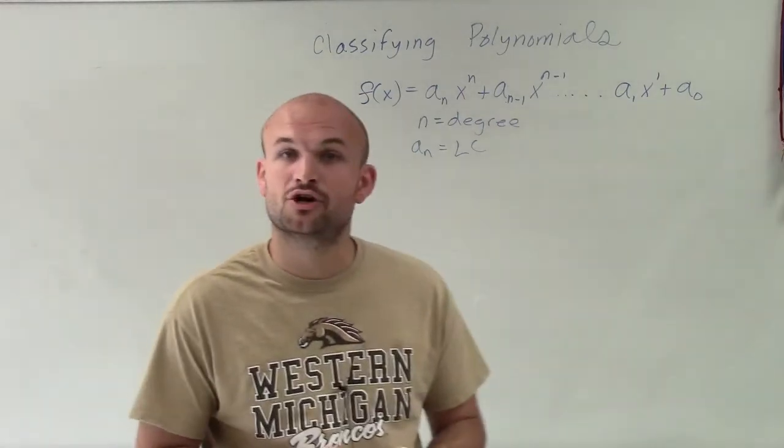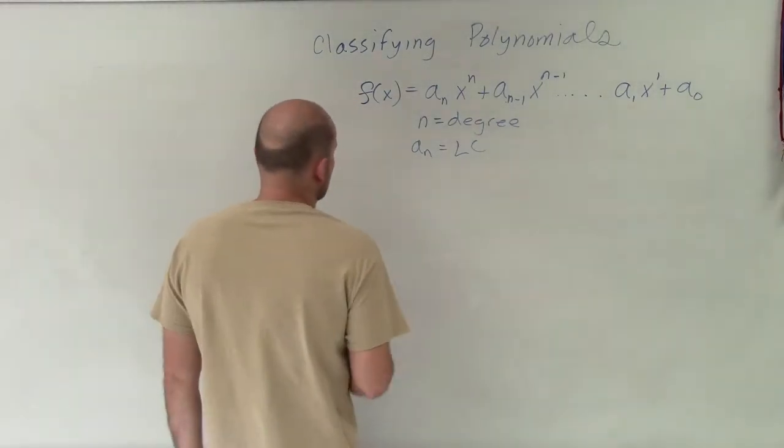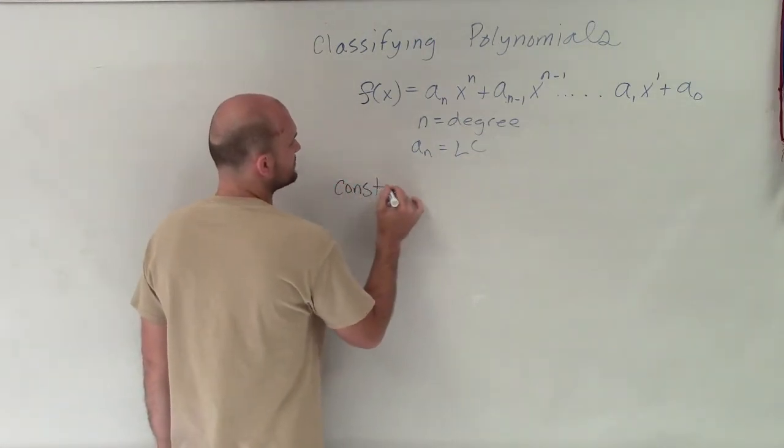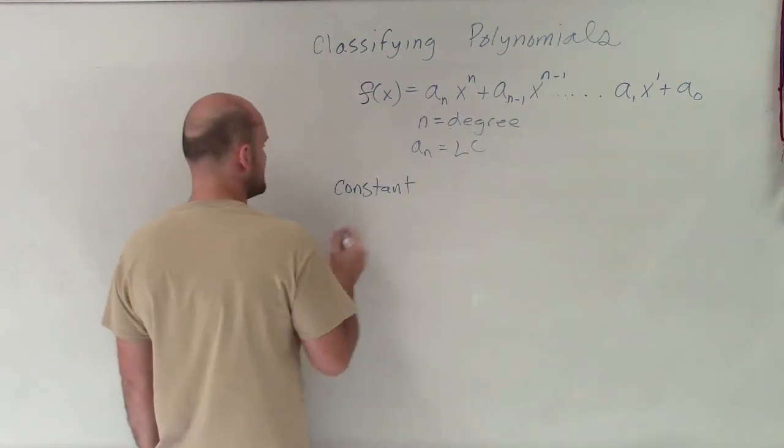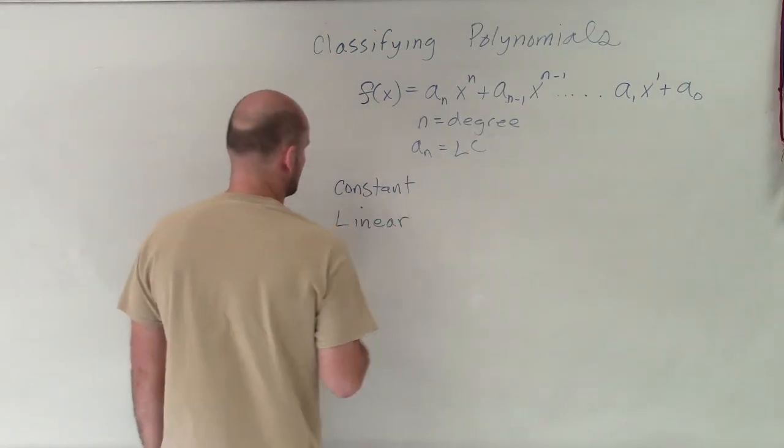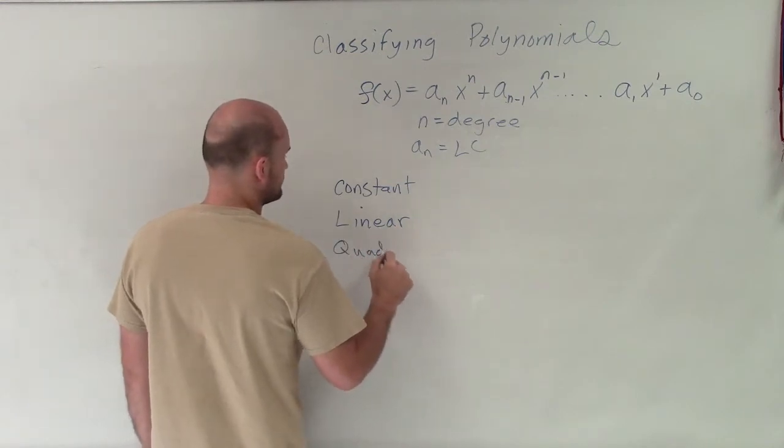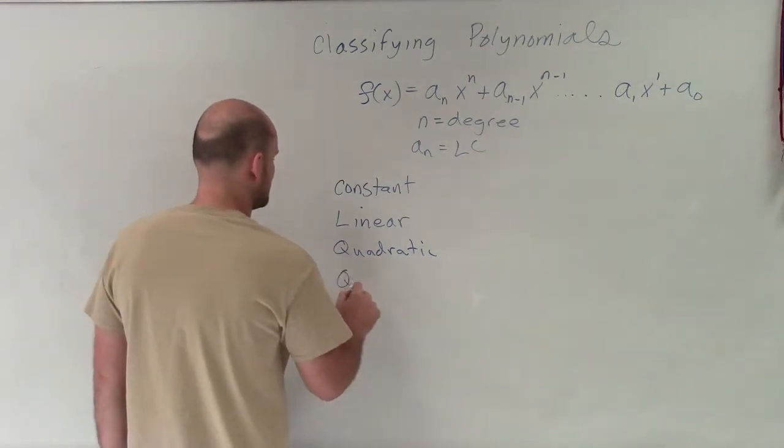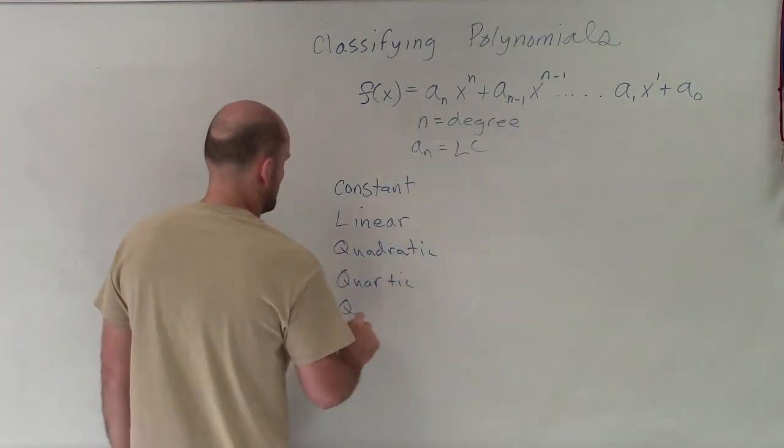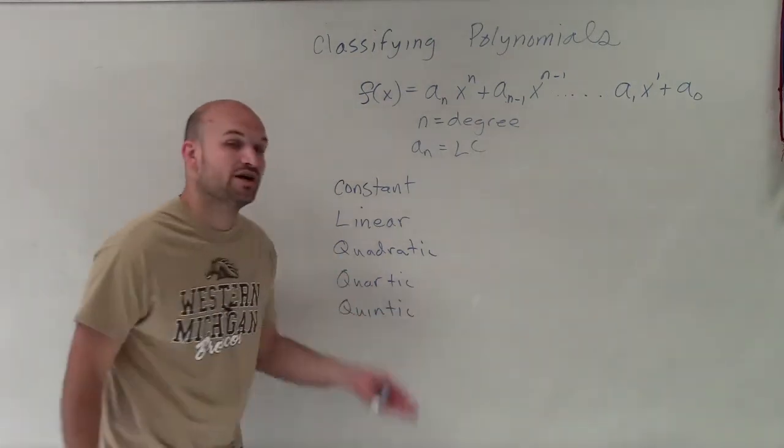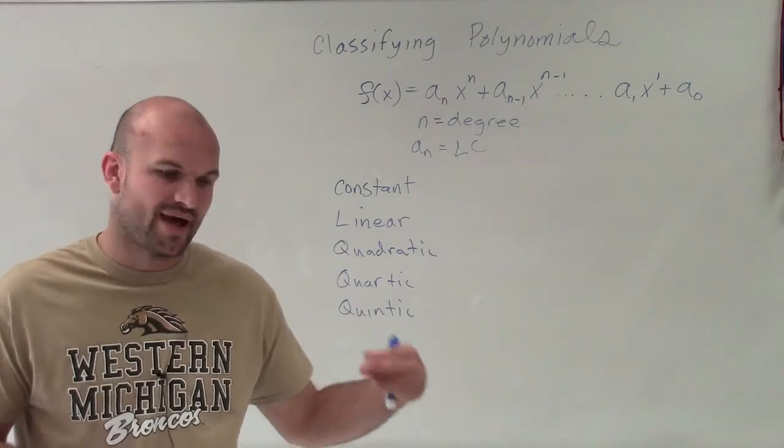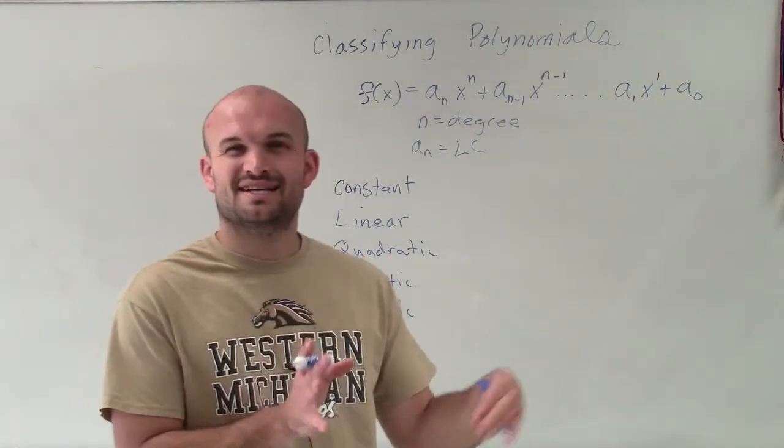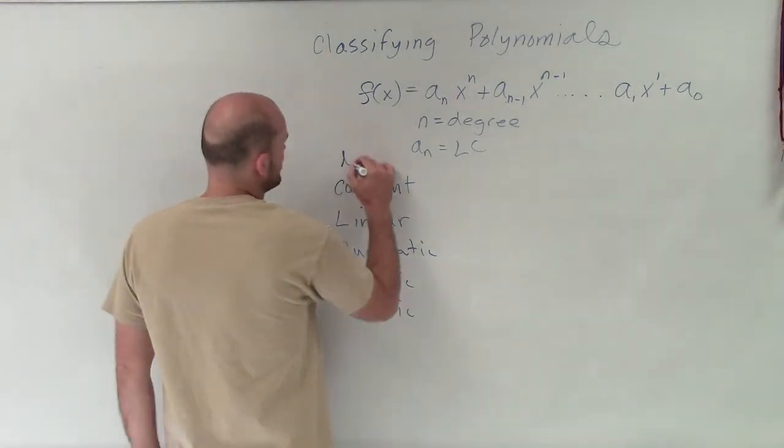So now we need to talk about the different types of polynomial functions. And we have a couple of them. First of all, we could have a constant. We have a constant, we could have a linear, we could have a quadratic, we could have a quartic, and a quintic. And we can keep on going on and on, but once we start getting past our fifth degree, the names, then we just kind of lump them a little bit more together. So here's a little bit of our names.